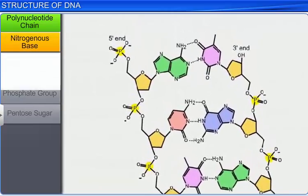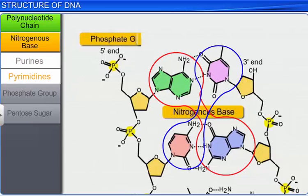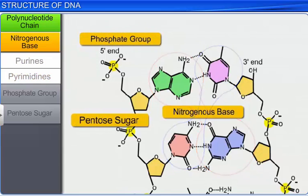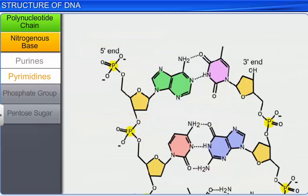Further, the nitrogenous base is of two types: purines and pyrimidines. The purines comprise adenine and guanine, while the pyrimidines comprise cytosine and thymine.